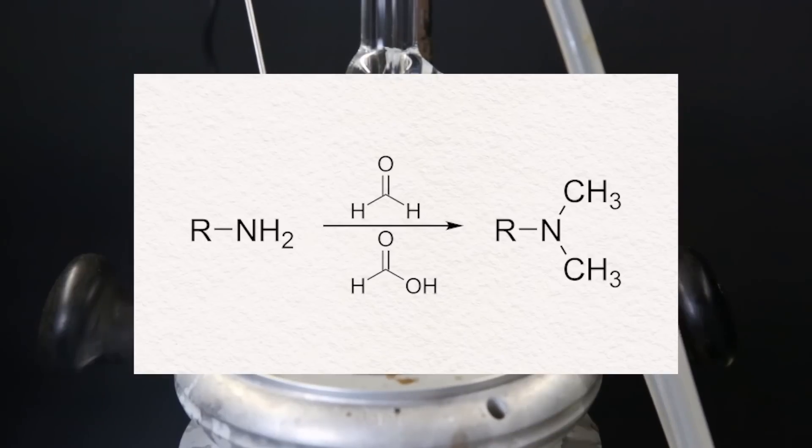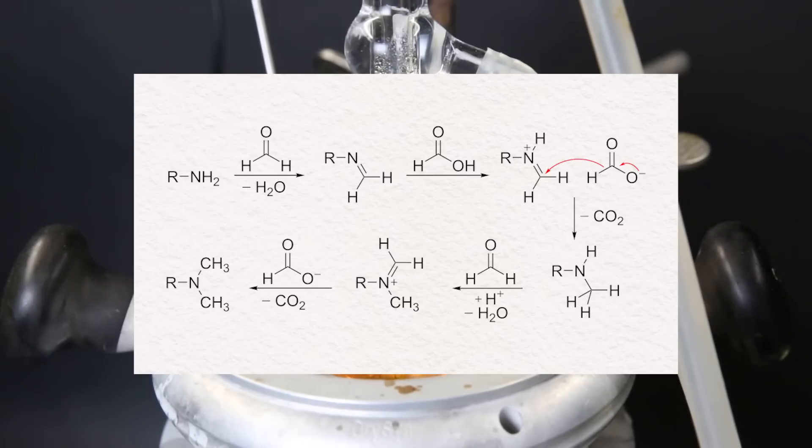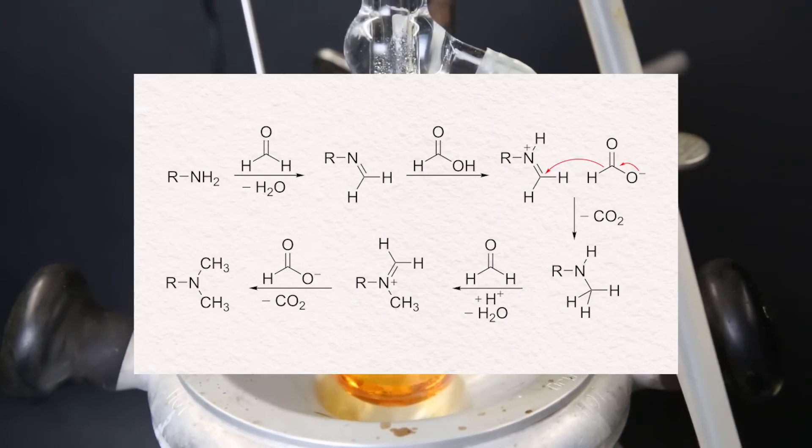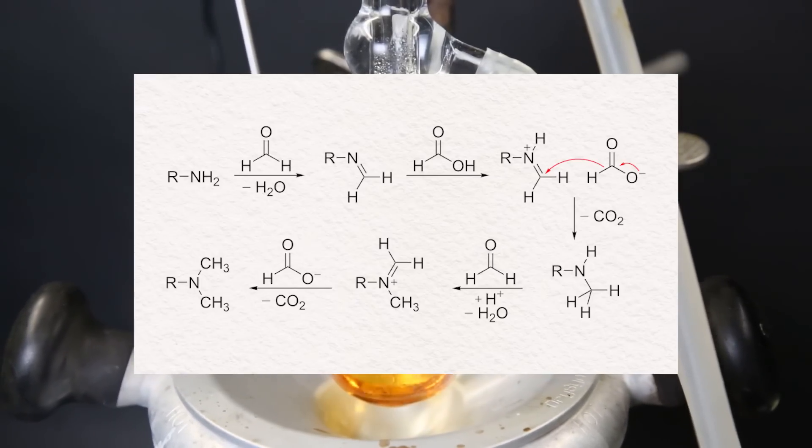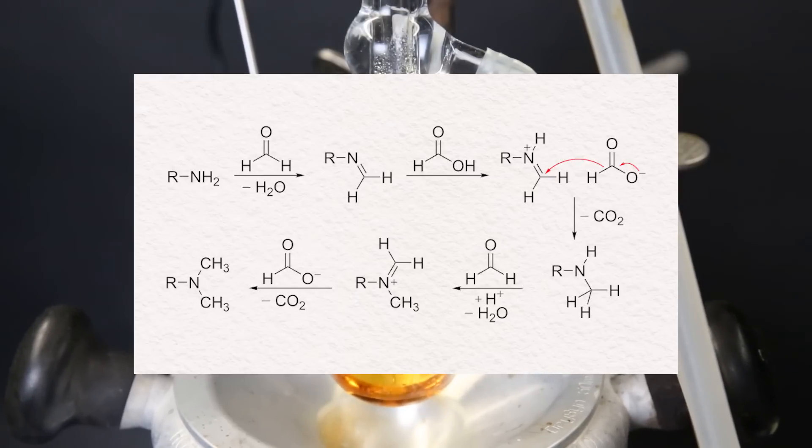What will happen during the reaction is called an Eschweiler-Clark methylation. By using excess formaldehyde and formic acid, a primary or secondary amine can be methylated. The first methylation of the amine begins with the imine formation with formaldehyde. The formic acid acts as a source of hydride and reduces the imine to a secondary amine. The driving force is the formation of CO2 gas, which will bubble out of the solution. The formation of the tertiary amine is similar, but it is slower because it's more difficult to form the iminium ion.